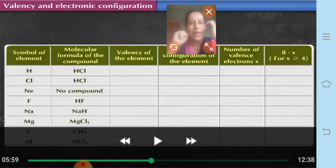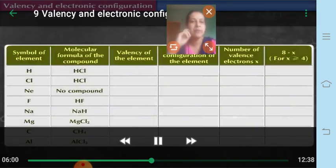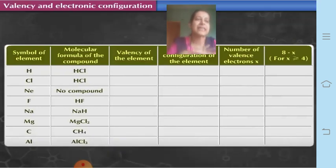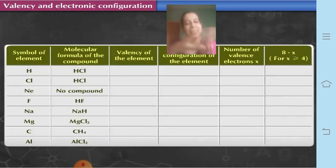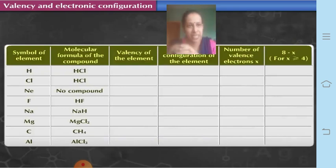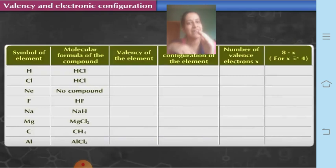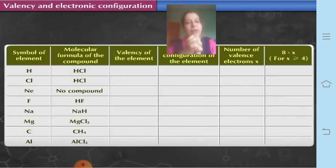Now let us find the valency of each element. Remember the rule: if x is the number of valence electrons in the outermost shell, and x is equal to 4 or less than 4, then valency equals x. Whereas if the number of valence electrons is more than 4, then we subtract from 8 — that is, 8 minus x — because the octet requires 8 electrons. If the number is 4 or more than 4, we subtract to find the valency.